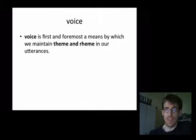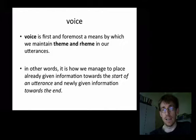Now, here's something that does wash. Voice, active or passive, is first and foremost a means by which we maintain theme and rheme in our utterances. Now, theme and rheme is basically just the way we manage to place already given information towards the start of an utterance and place newly given information towards the end of an utterance. Now, there's a good cognitive reason for this. It makes it easier for us to follow what somebody is saying if the beginning of each new utterance or each new proposition is based or rooted somehow in stuff we know or we have been told or is a given. And then we move from that secure ground of shared knowledge to the new information that the speaker writer is providing us with.